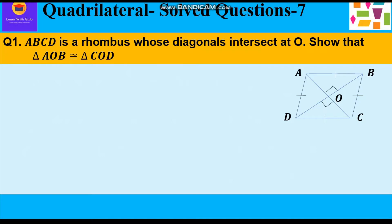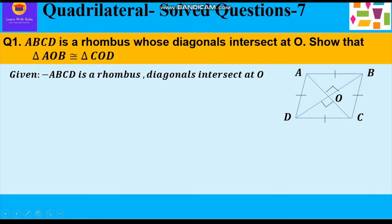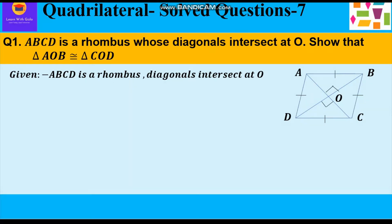Now let's start with the first question. ABCD is a rhombus whose diagonals intersect at O. Show that triangle AOB is congruent to triangle COD. Given to us: ABCD is a rhombus and diagonals are intersecting at O. We know in a rhombus, diagonals bisect each other at right angles, so they are perpendicular to each other and form 90 degrees with each other.